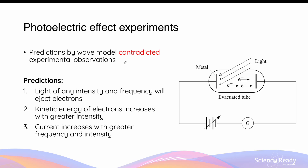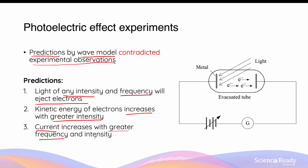Photoelectric effect experiments paved the path to Einstein's quantum model of light. The wave model made predictions that contradicted Lenard's experimental observations. The wave model predicted: first, that light of any intensity and any frequency should be able to eject electrons; second, that the kinetic energy of ejected electrons should increase with greater intensity, since intensity relates to wave amplitude and therefore energy; and third, that the current produced by ejected electrons increases with both greater frequency and greater intensity.